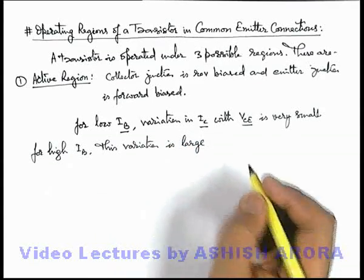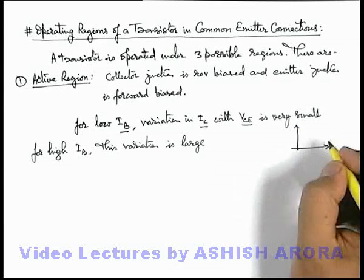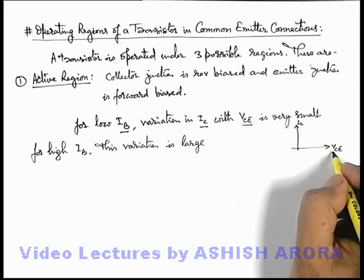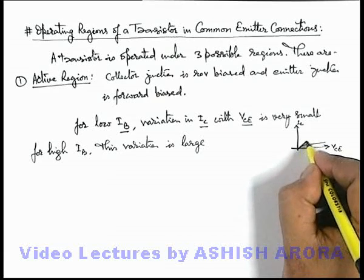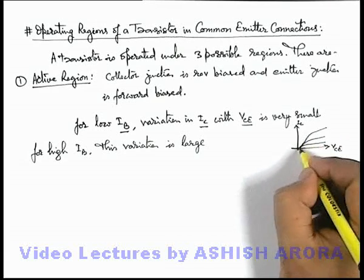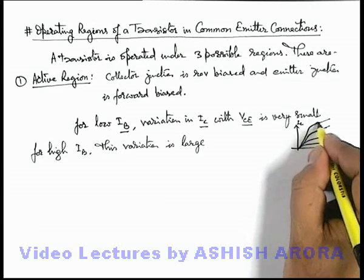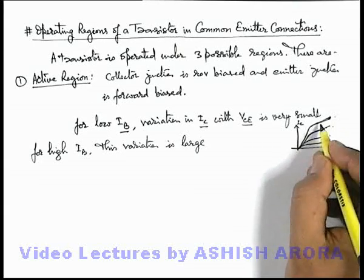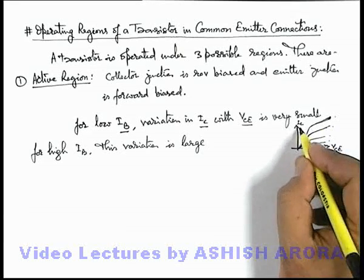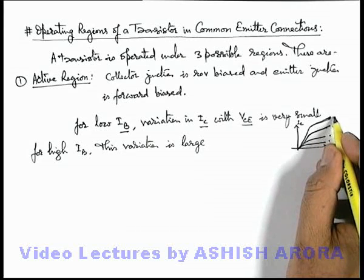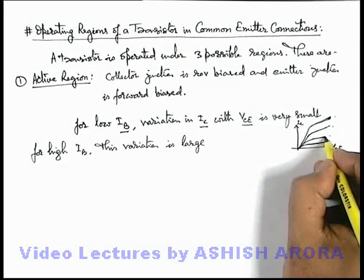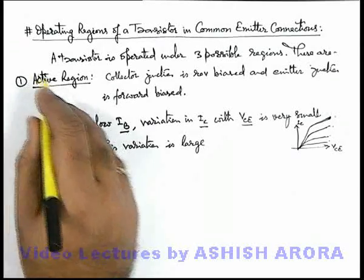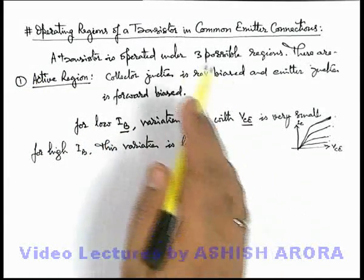If we look at the output characteristic — that is, between collector current and collector-emitter voltage — for low values of base current the variation is very small, but when we move to high values of IB the slope of the graph increases. When base current is large, the variation in IC with VCE is more. For low values of IB the curve is approximately horizontal, so there won't be much effect on IC if VCE is varied. This is the active region of a transistor under common emitter connections.